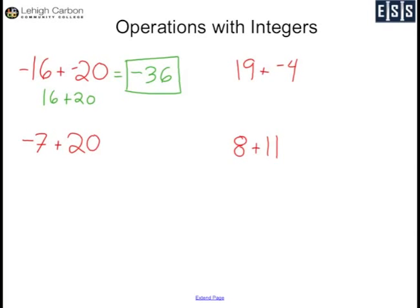Now I have 19 plus negative 4. My signs are different — I have a positive 19 and a negative 4. 19 is the bigger number, so my answer is going to be positive. I subtract: 19 minus 4 is 15, so my answer is positive 15.